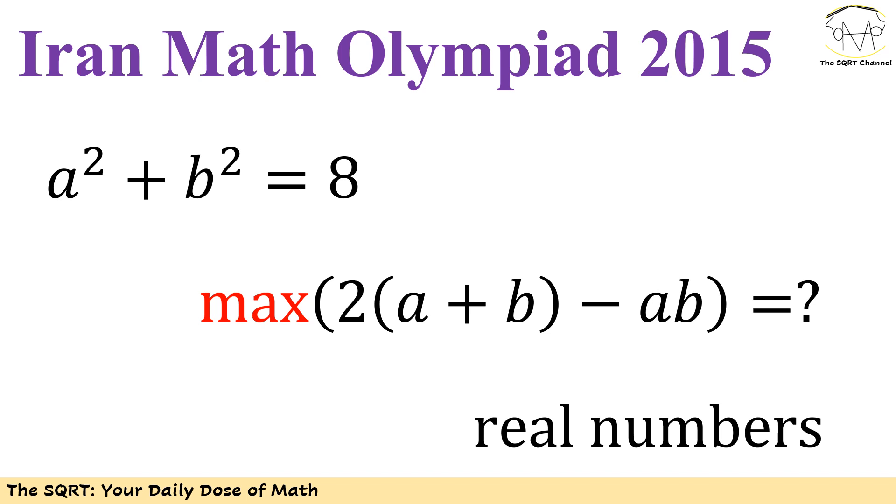In this problem I have a squared plus b squared equals 8, and we are going to find the maximum value that 2 times a plus b minus ab is going to get. We know that a and b are real numbers.